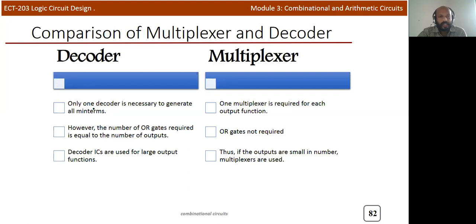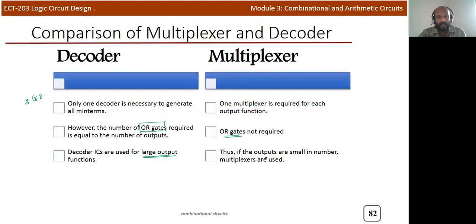Comparing decoder and multiplexer: with a decoder, only one decoder is needed to generate all minterms — for example, a 3-to-8 decoder can implement all functions of three variables. However, different OR gates are required for each function, which is a drawback. With a multiplexer, no OR gate is required, but a different multiplexer is needed for each function. Decoders are preferred when there are multiple output functions; multiplexers are preferred for fewer output functions.